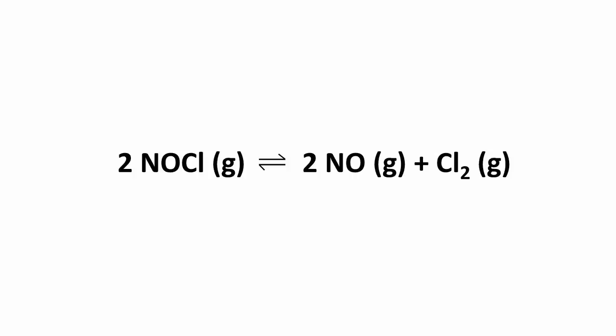If there are no gaseous reactants or products, or if we have the same number of gas molecules on each side of the balanced equation, then there is little the system can do to offset the perturbation.